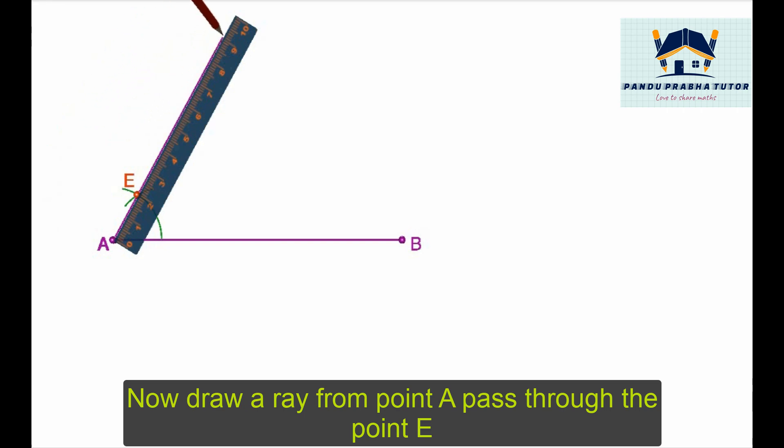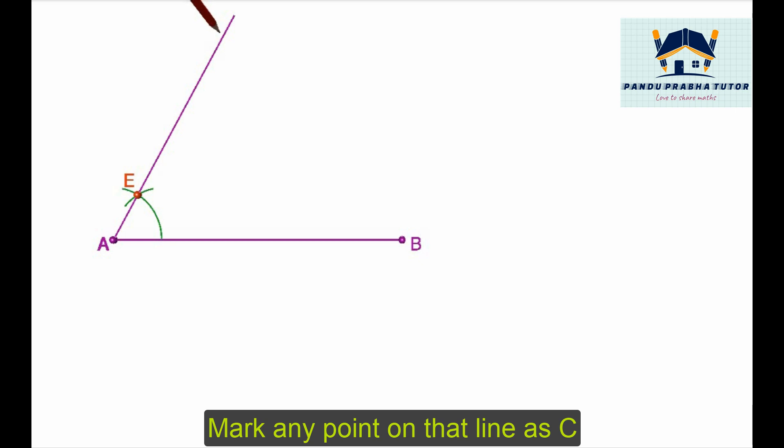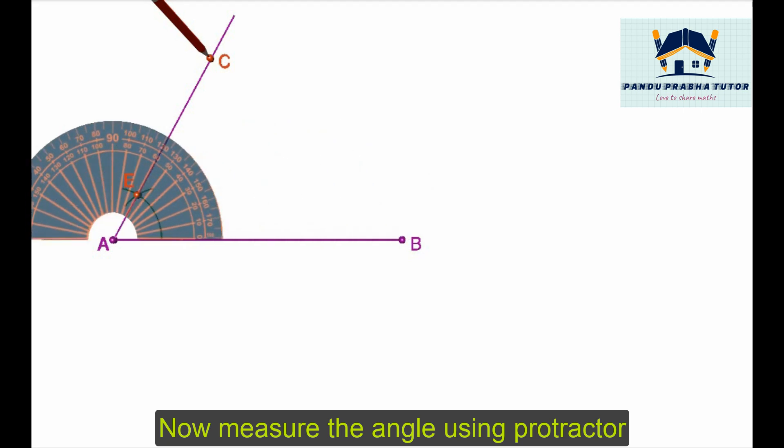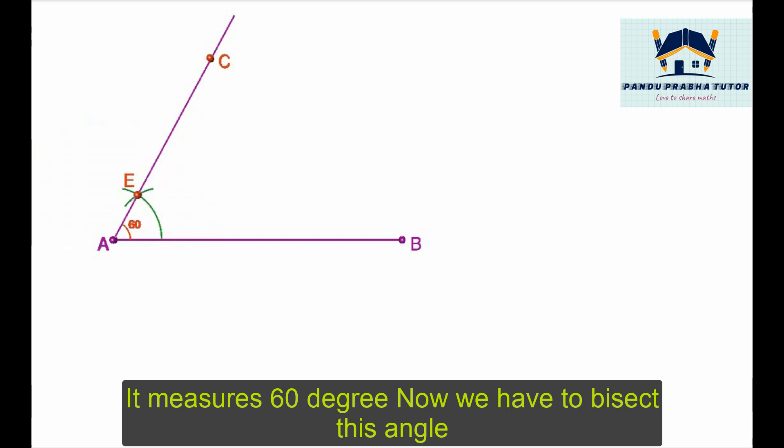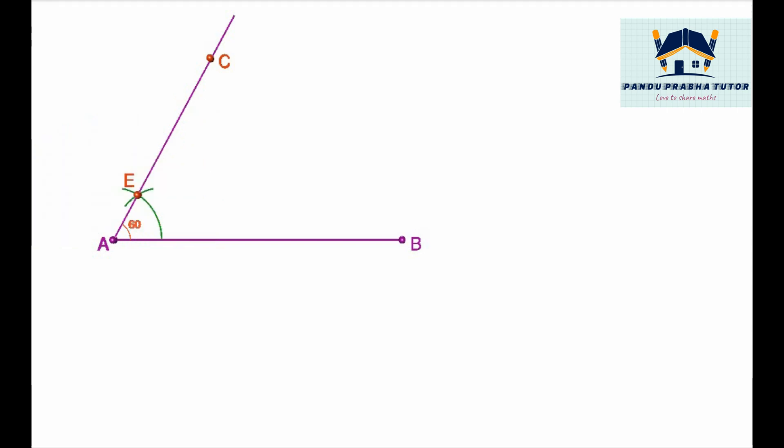Draw a dotted line because this angle is 60 degrees. Now we have to bisect this 60 degree angle CAB. In previous construction we discussed how to bisect an angle.